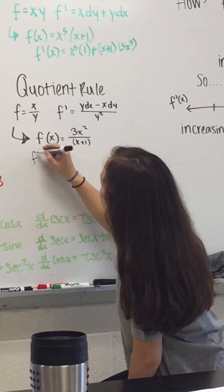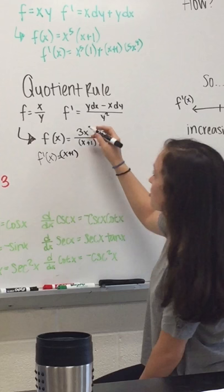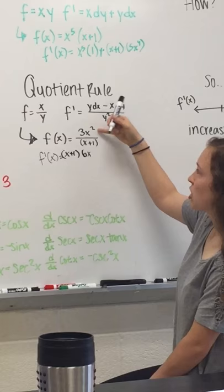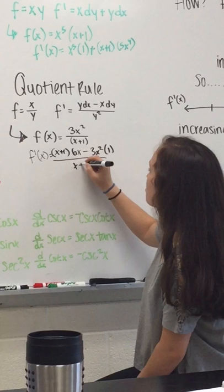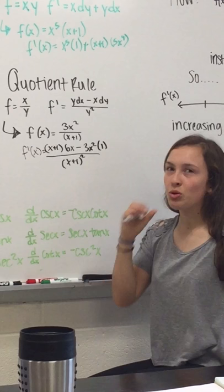So, for this function, f of x equals 3x squared over x plus 1, we would have bottom, x plus 1, times the derivative of the top, so using the shortcut, multiply out 6x, and then subtract 1, so just 1, minus top, 3x squared, times the derivative of the bottom. So, x plus 1, the derivative would just be 1. All over x plus 1 squared. And you could just simplify that out, but it would take a lot more work.